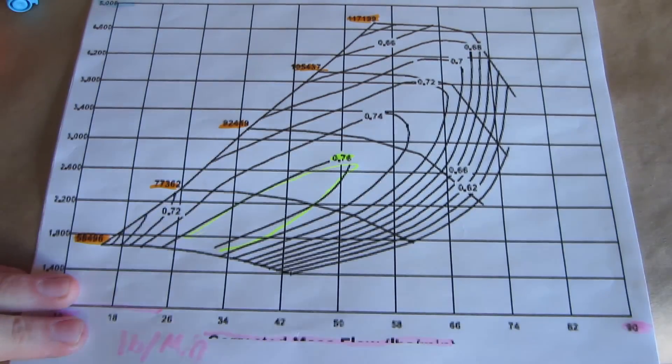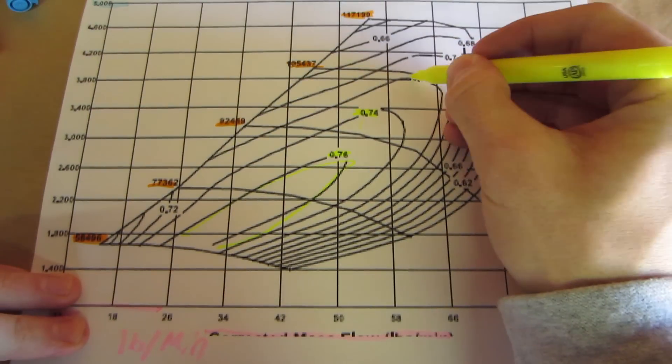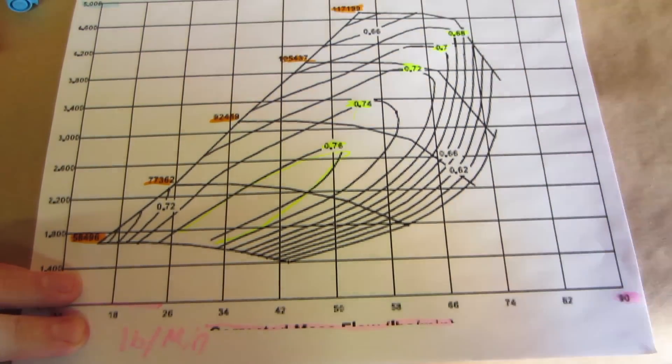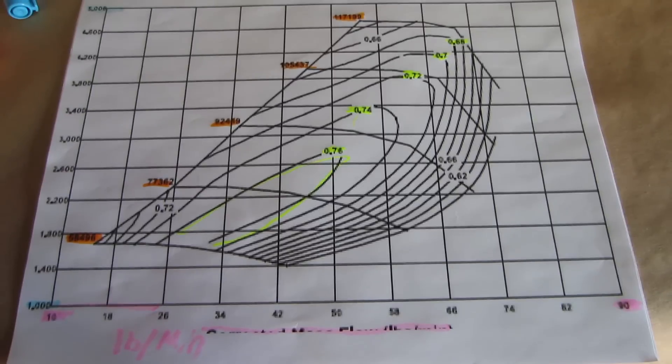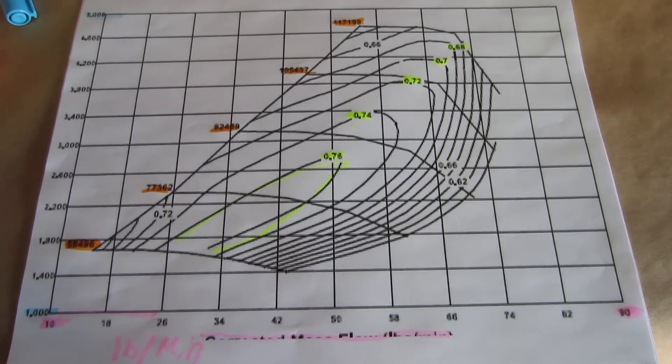Each island is labeled with a number: .76, .74, .72, .70, and so on. These numbers represent a percentage that relates to how efficiently the compressor can move air at that point. This is known as compressor efficiency.